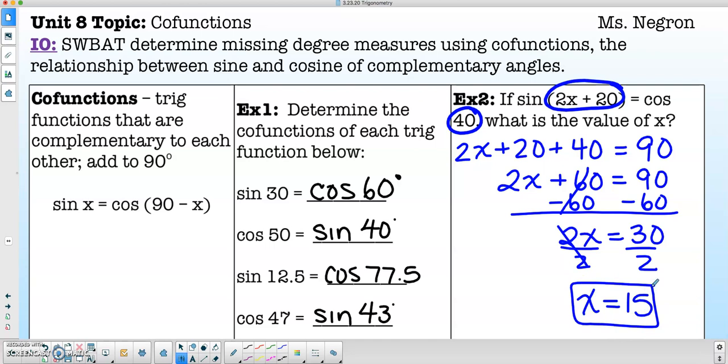And in order to check your work, if you substitute back in, 2 times 15 plus 20. So 2 times 15 is 30. And then 30 plus 20 is equal to 50.